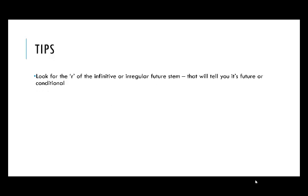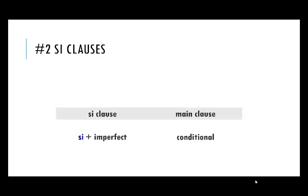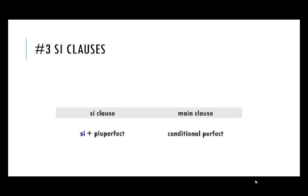Tips: look for the R of the infinitive or the irregular future stem — that will tell you it's future or conditional. Remember, the si clause itself will never be in the future or the conditional. To summarize: number one si clauses — if the si clause is in the present tense, the main clause will be in the future, present, or imperative. Number two — if the si clause is in the imperfect, the main clause will be in the conditional. Number three — if the si clause is in the pluperfect, the main clause will be in the conditional perfect.